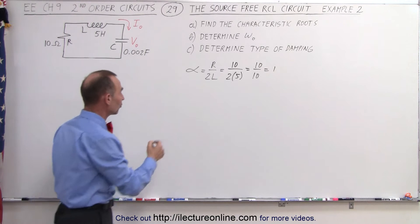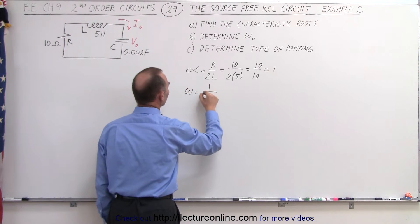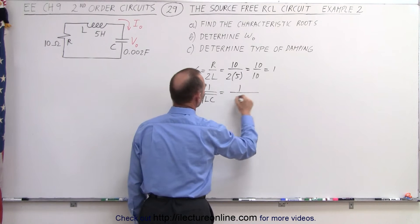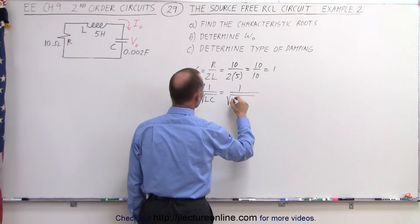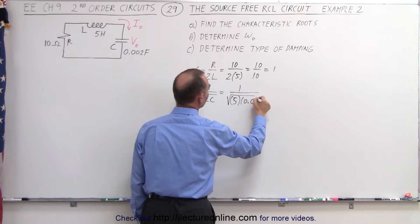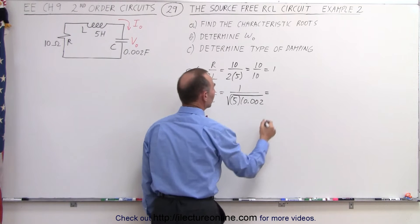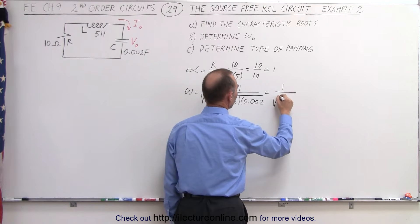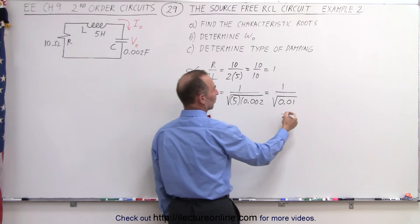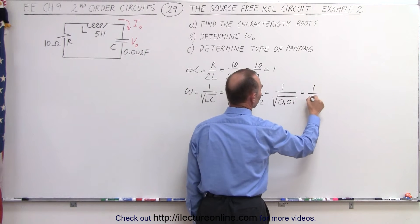But let's now find the natural frequency. Omega is equal to 1 over the square root of L times C, which is equal to 1 over the square root of L, which is 5, and C, which is 0.002, which is equal to 1 over the square root of 0.01. Taking the square root of that, which is equal to 1 over 10...